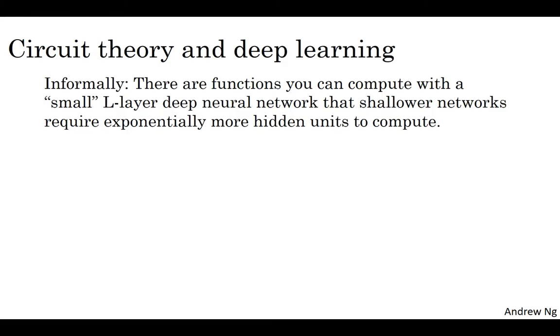The other piece of intuition about why deep networks seem to work well is the following. So this result comes from circuit theory, which pertains to thinking about what types of functions you can compute with different AND gates and OR gates and NOT gates, basically logic gates. So informally, the functions you compute with a relatively small but deep neural network, and by small, I mean the number of hidden units is relatively small. But that if you try to compute the same function with a shallow network, so if you aren't allowed enough hidden layers, then you might require exponentially more hidden units to compute.